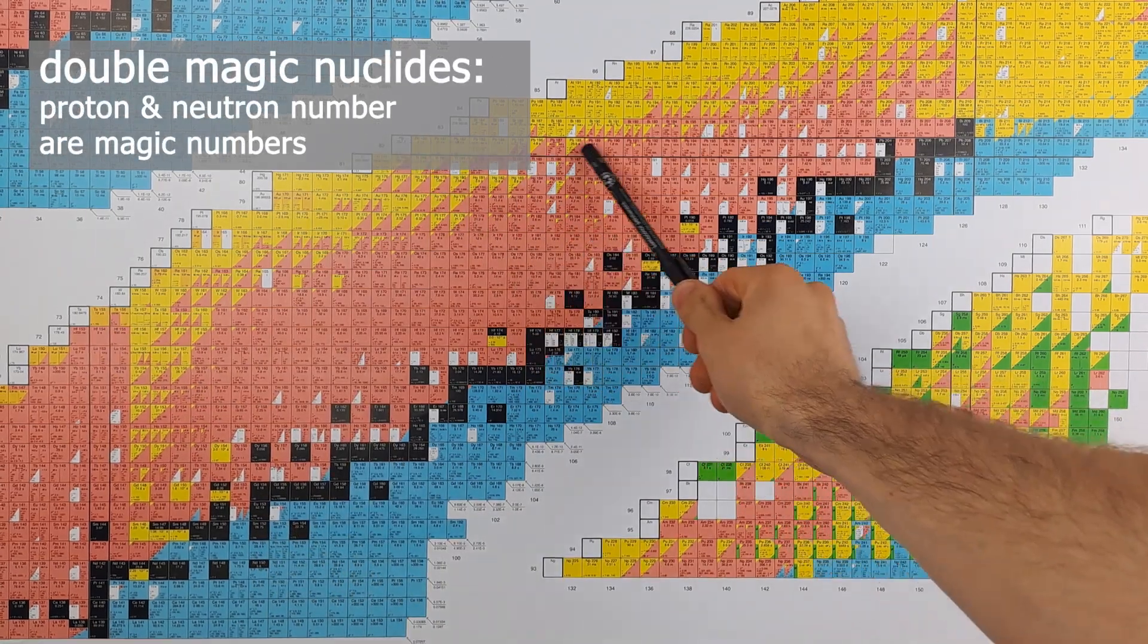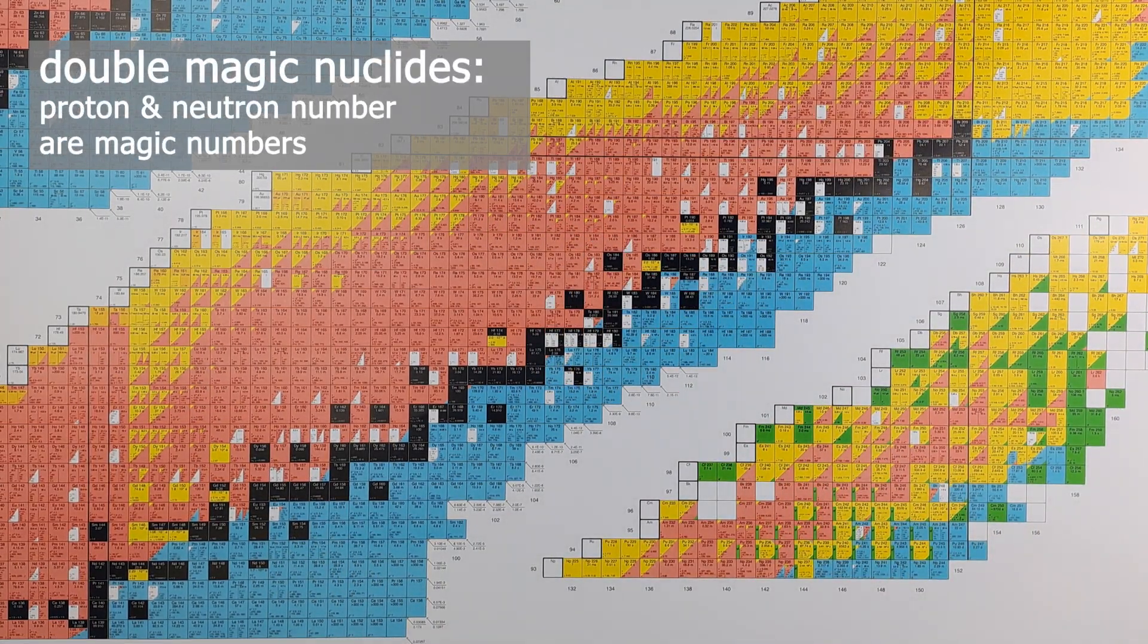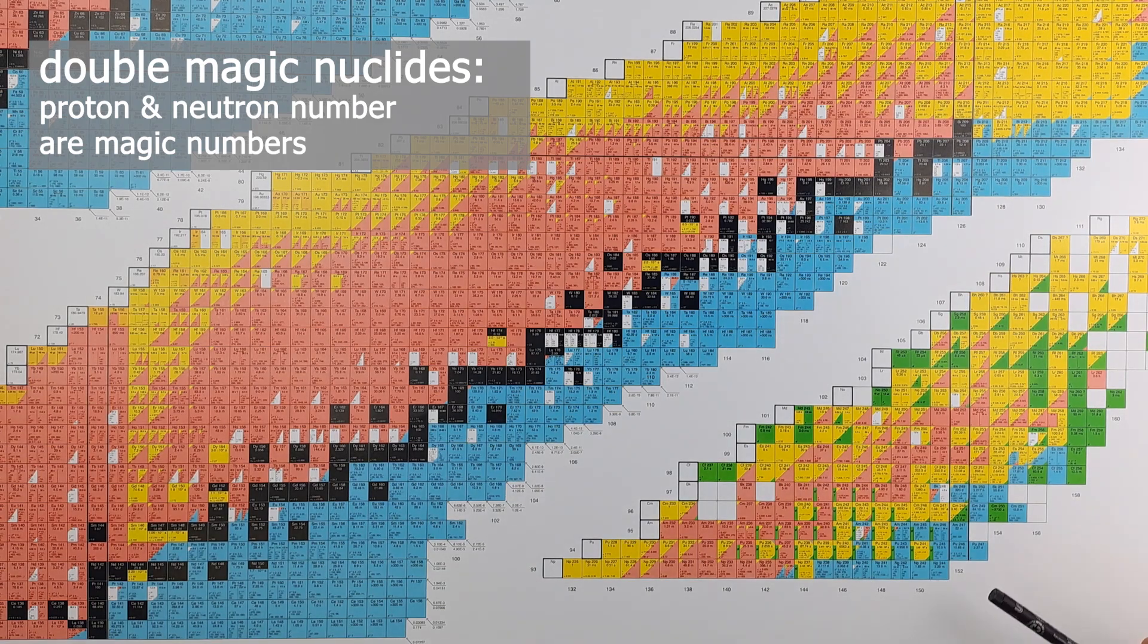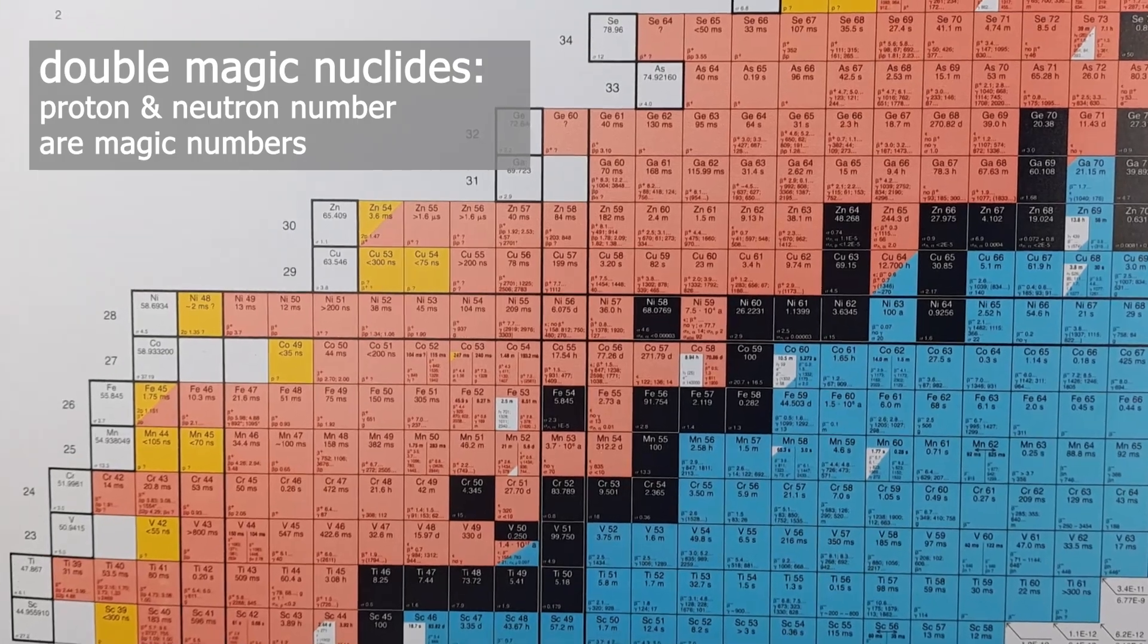As seen these are also marked in the chart of nuclides. Some nuclides fulfill a magic number for both the proton and the neutron number making these nuclei particularly stable. These are what we call double magic nuclei.